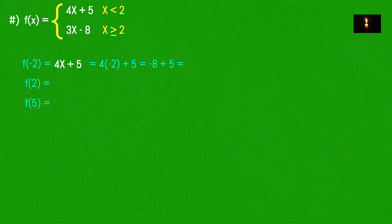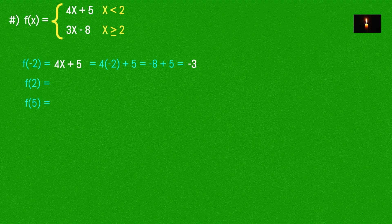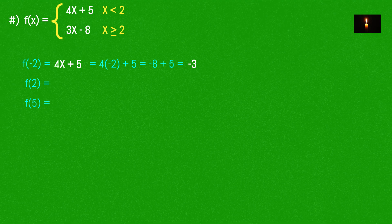So f(-2) = 4(-2) + 5 gives x = -3. For f(2), we use the second piece: 3x - 8 = 3(2) - 8.